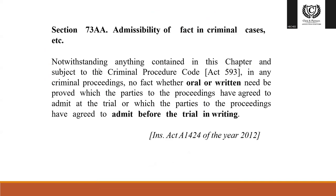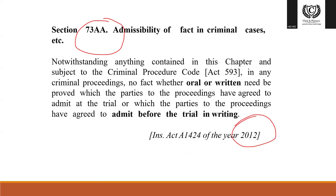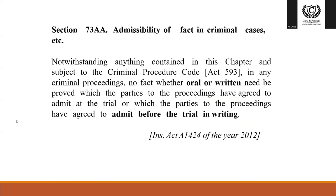Section 73AA came into operation by the 2012 amendment. Where facts have been agreed by the prosecution and the accused before trial, somewhat in the form of writing, those facts will not be argued in court. Section 73AA deals with admissibility of facts in criminal cases — the rationale is similar to Section 58 in civil cases: to save court time and the cost of the parties, and to reduce the duration of hearing dates.